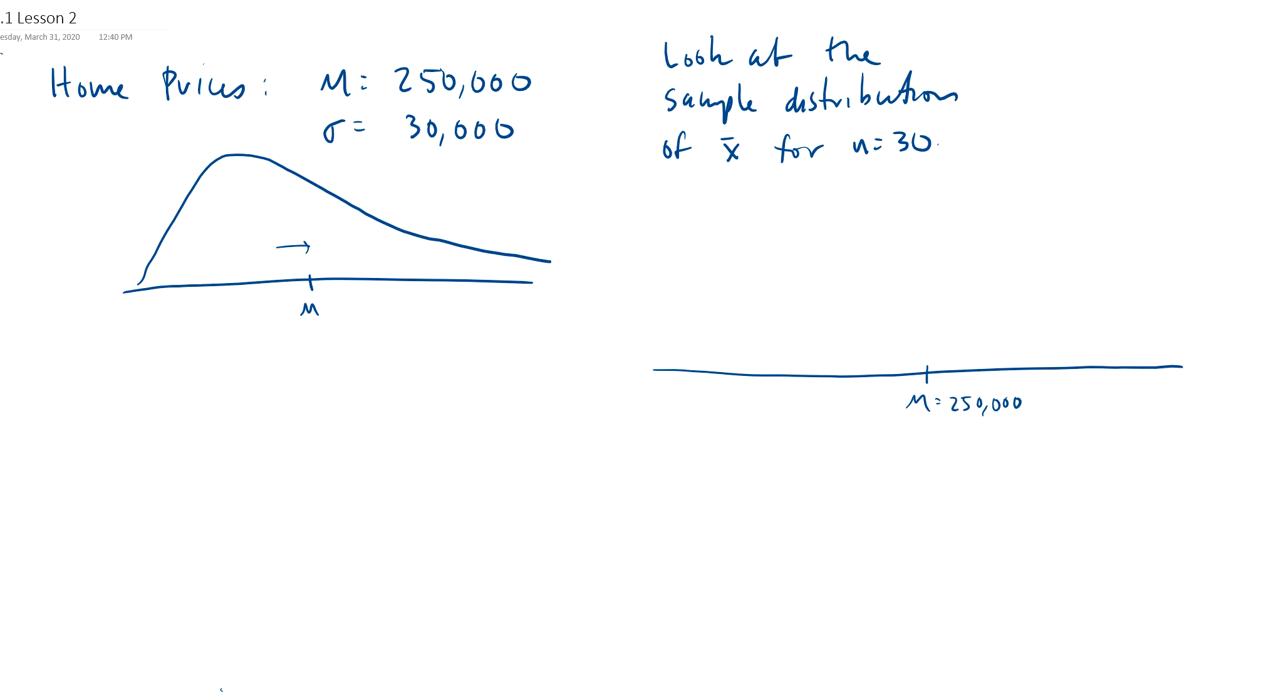That's saying, let's take a sample of 30 houses, random sample. The sample of 30 houses and find the average price of those 30 houses. So I take 30 houses. I take 30 other houses, find the average price. Take another 30 houses, find the average price. Another 30. Another 30. I'm going to be getting different values.